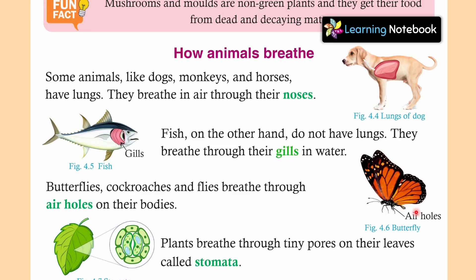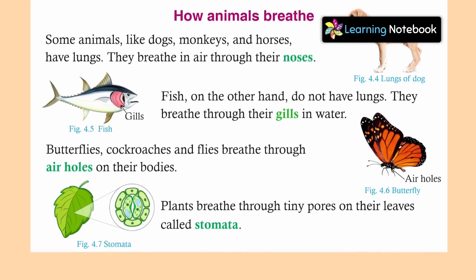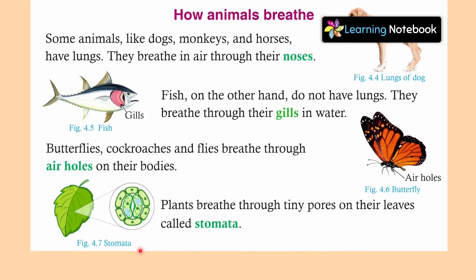Now, what about plants? Plants breathe through tiny pores on their leaves called stomata. Plants की जो leaves होती हैं, उन में बहुत छोटे-छोटे pores होते हैं जिन्हें हम stomata कहते हैं. Stomata की मदद से वो breathe करते हैं — वो carbon dioxide हवा से लेते हैं and they breathe out oxygen. इस तरह animals और plants का breathing process बहुत अलग होता है, breathing organs कैसे अलग होते हैं इनके.